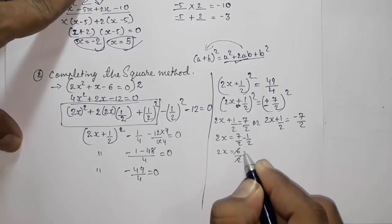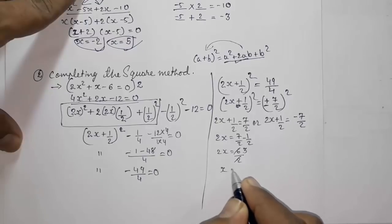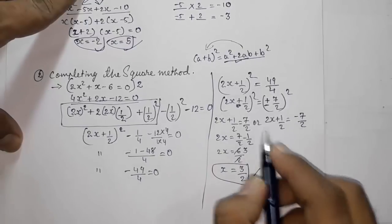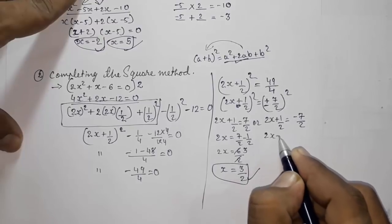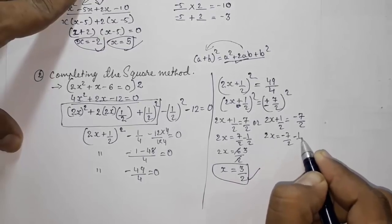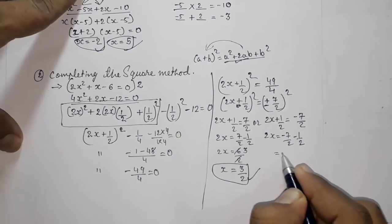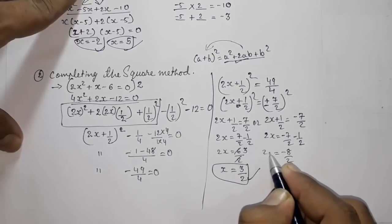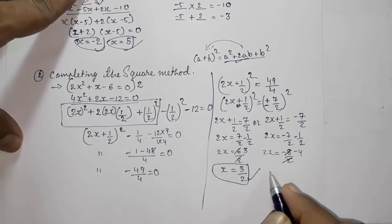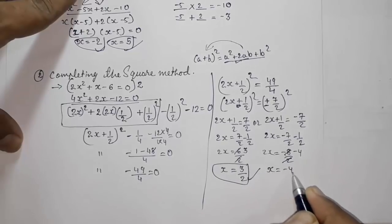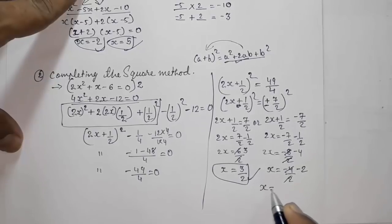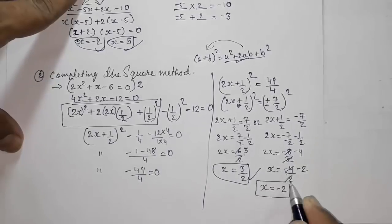For the first case: 2x = 7/2 − 1/2 = 6/2 = 3, so x = 3/2. For the second case: 2x = −7/2 − 1/2 = −8/2 = −4, so x = −4/2 = −2. The two zeros are x = 3/2 and x = −2.